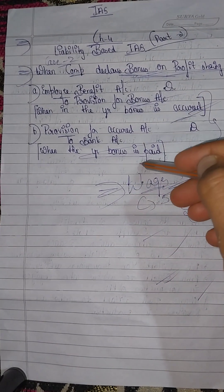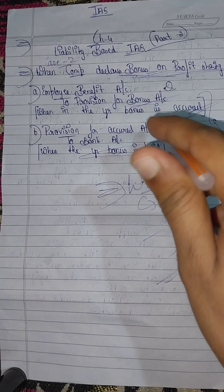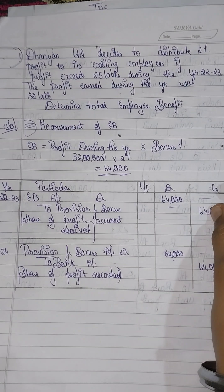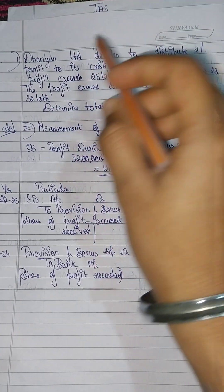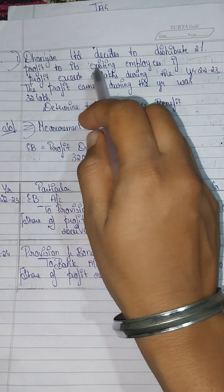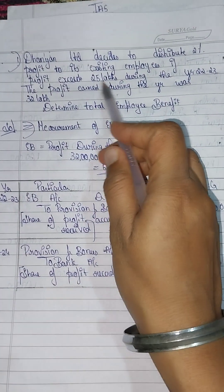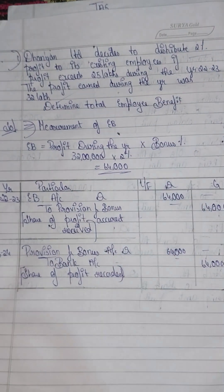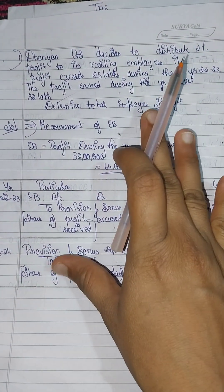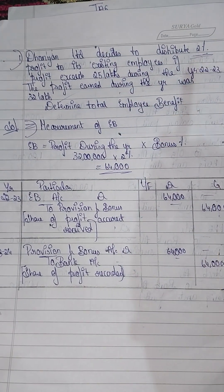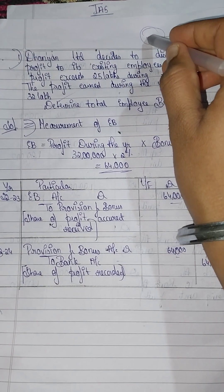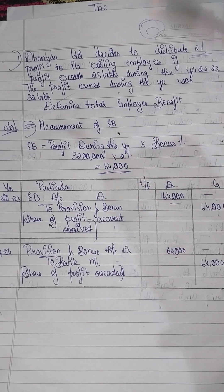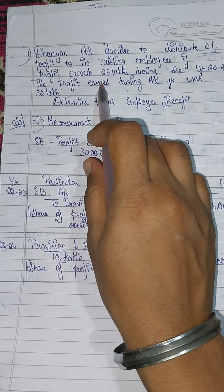The second entry is: Provision for Accrued Account debit to Bank Account, when the bonus is paid. So now the problem you have to solve: Dhyan Limited decides to distribute 2% of profit to the existing employees if profit exceeds 25 lakhs during the year 2022-23.